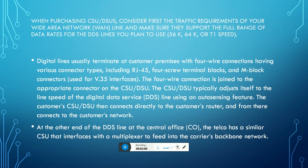The digital line is usually terminated at customer premises with four-wire connections, having various connector types including RJ-45, force terminal block, and M block connectors used for the V35 interface cable. The CSU/DSU typically adjusts itself to the line speed of the Digital Data Service DDS line using its auto-sensing features.